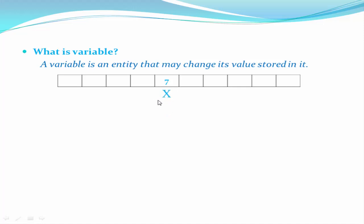To identify this location, a name must be given. Here I use the name x, so we can say x is a variable which holds the value 7. Now if we want to store another value to the same location x, the new value overrides the previous value. Suppose we store the value 9 — now x holds 9, not 7, because a variable can store only one value at a time. Since x holds different values at different times, that's why x is called a variable.